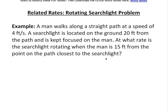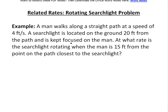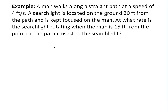Like always with a related rates problem or any word problem, basically read closely and draw along as you write it. That's what I usually do. So a man is walking along a straight path at a speed of 4 feet per second. Let's draw a straight path right here. So if this is the path he's walking, it's just a straight path, and let's say he's over here — so this is him.